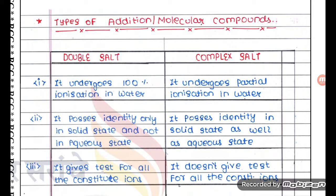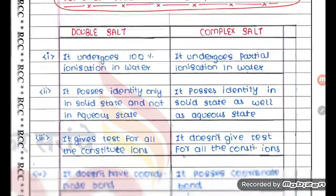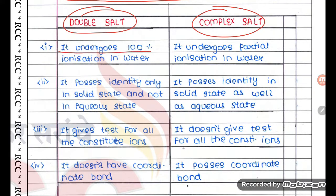Hello students, let us try to understand the difference between double salt and complex salt. Double salt undergoes 100% ionization in water, whereas complex salt undergoes only partial ionization in water.